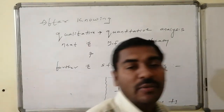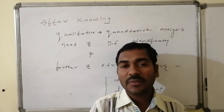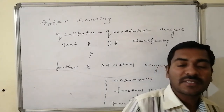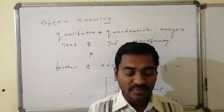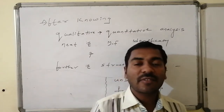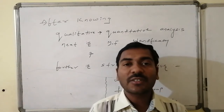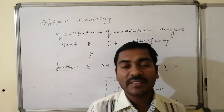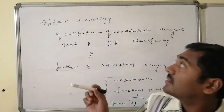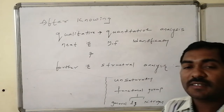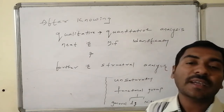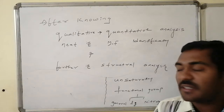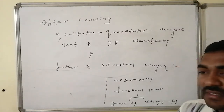After knowing the qualitative and quantitative analysis of elements present in an organic molecule, the next step is identifying the structure of the organic compound — its molecular formula, and from there, its structure. From the percentages of the elements present, we will identify the empirical formula as well as the molecular formula, and further structural analysis follows.